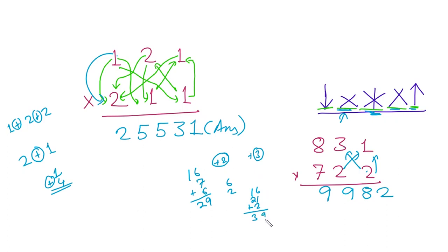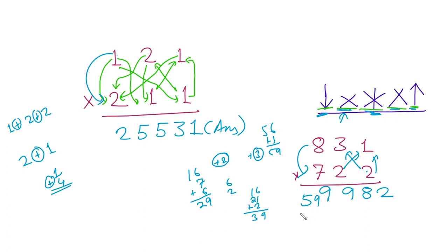For the final step, the down arrow: 8 multiplied by 7 is 56, plus the remaining carry of 3, gives 59, so we write 59. So 59982 is our answer. I hope you liked this video — make sure you share it with people who need it. Have a great day, bye bye, take care!